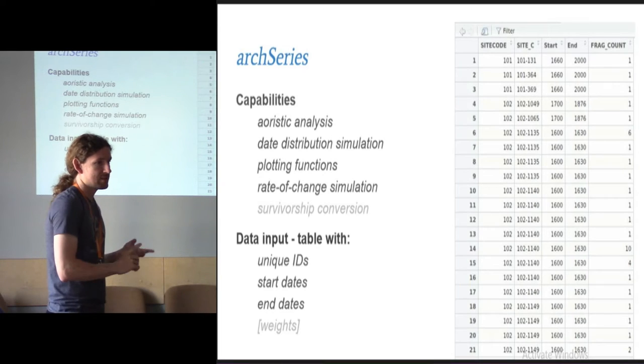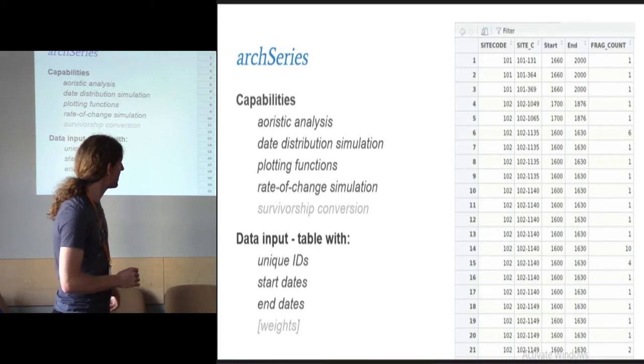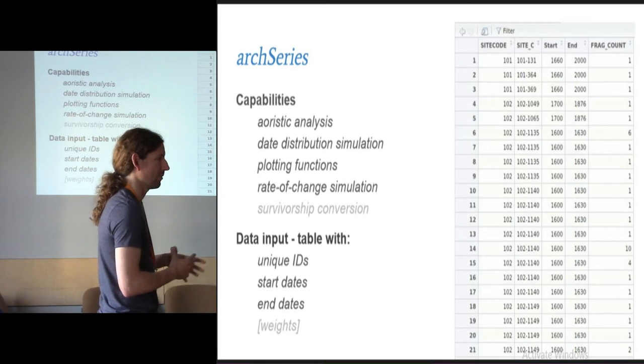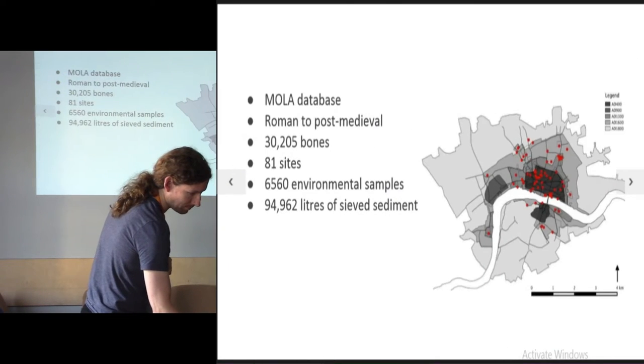A table with unique IDs, start dates, and end dates. And you can also feed in a column of weightings. So this is some zoological data that have fragment counts. Or you can just not do that and everything will be weighted as one automatically.